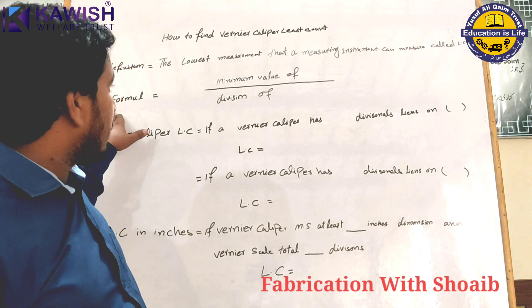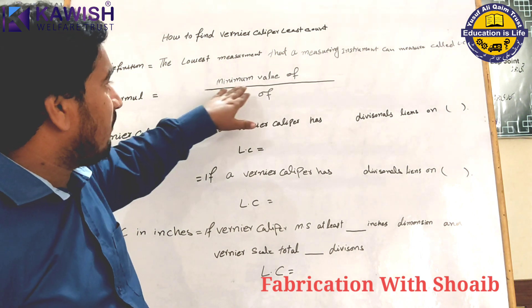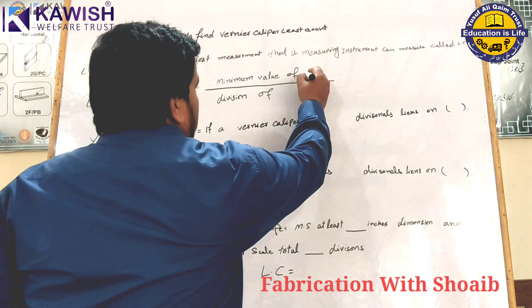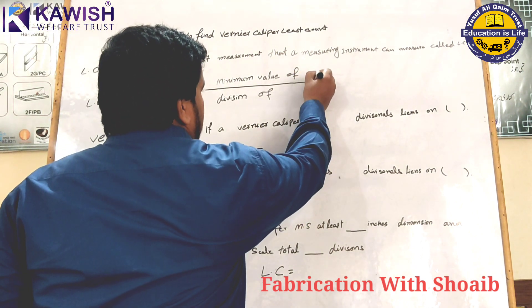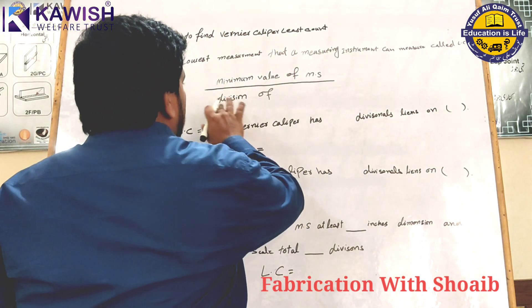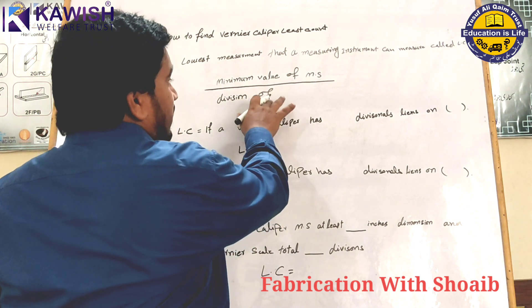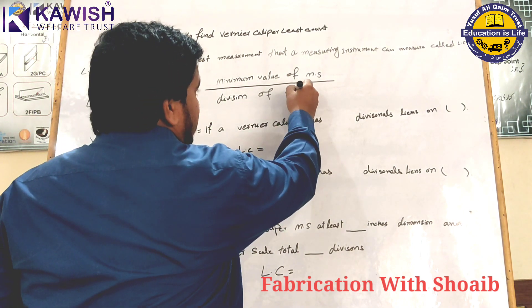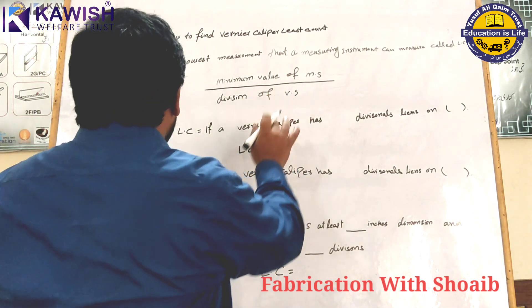Least count formula: minimum value of main scale divided by the number of divisions on the vernier scale.